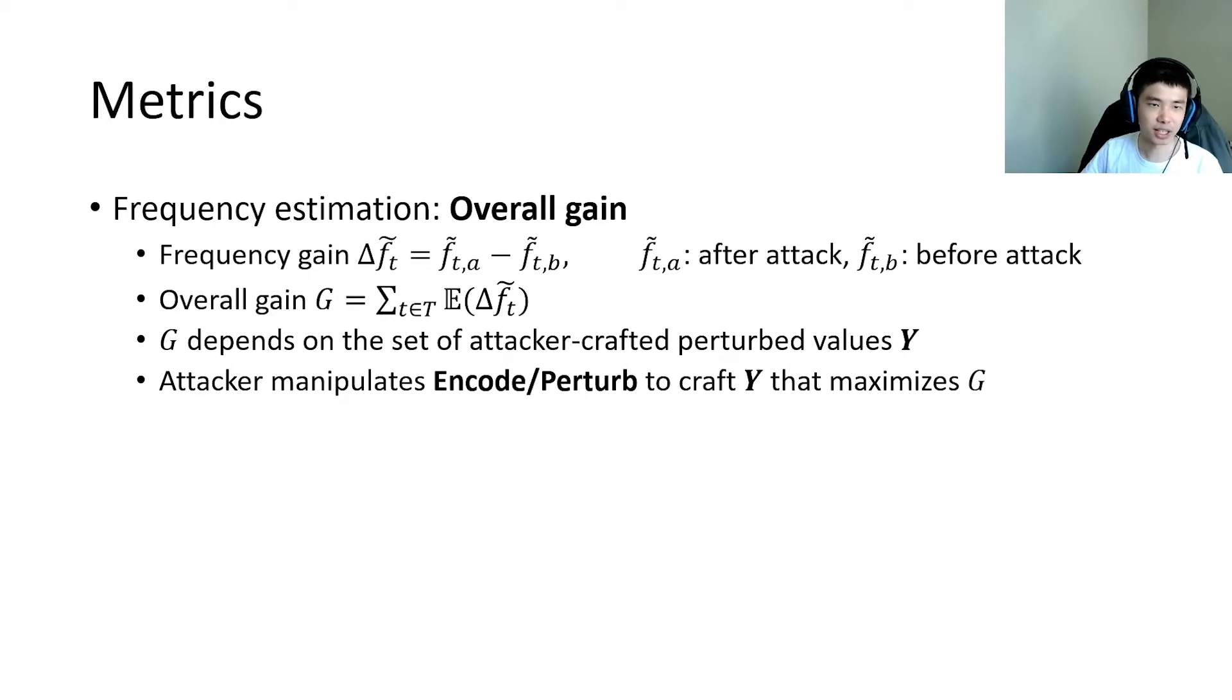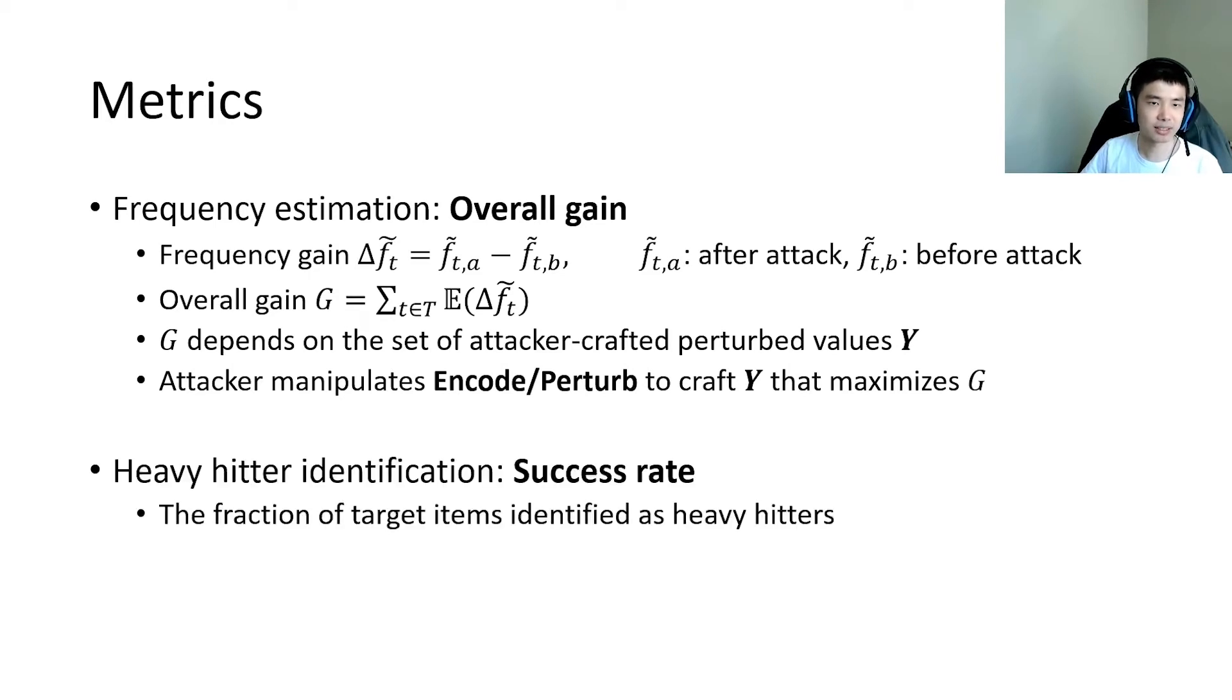For heavy hitter identification, we use success rate as the metric, which is defined as the fraction of target items that are identified as heavy hitters.